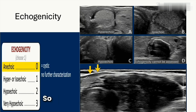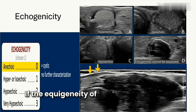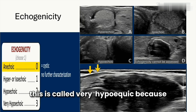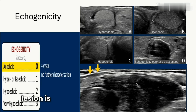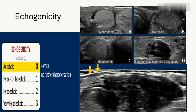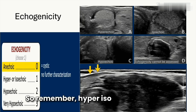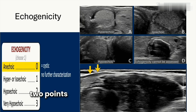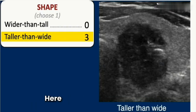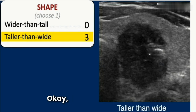These are the strap muscles in front of the thyroid gland. If the echogenicity of the thyroid lesion is at least as low as that of the muscles, it is called very hypoechoic, and a very hypoechoic lesion is highly suspicious for malignancy. To summarize: hyper/iso = one point, hypo = two points, very hypoechoic = three points.